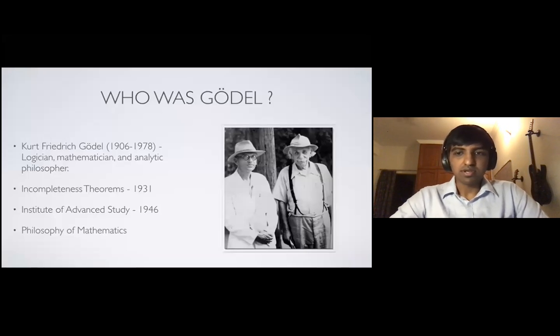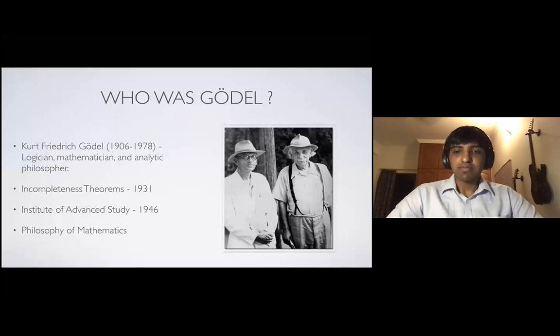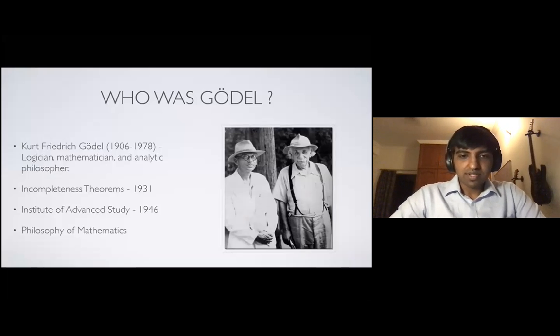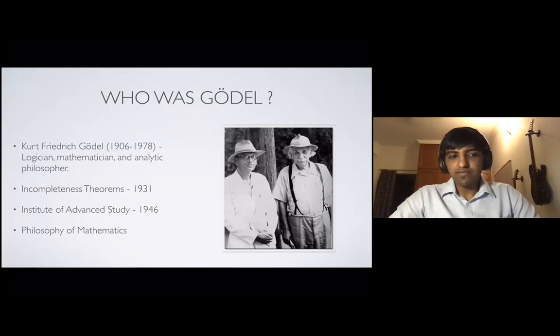So who was Gödel? Gödel was a logician, mathematician, and analytic philosopher. He was relatively unknown until 1931 when he came out with his groundbreaking incompleteness theorems. Soon after that, World War II struck, and he moved to Institute of Advanced Study in Princeton and took a permanent position there. He was also good friends with Albert Einstein. And soon after he moved to Princeton, he actually formally went into philosophy of mathematics.